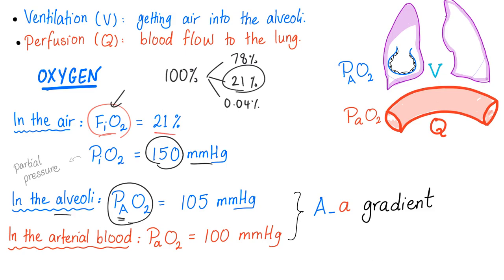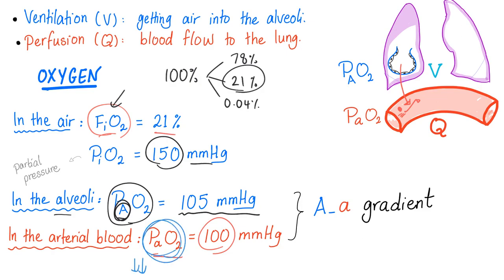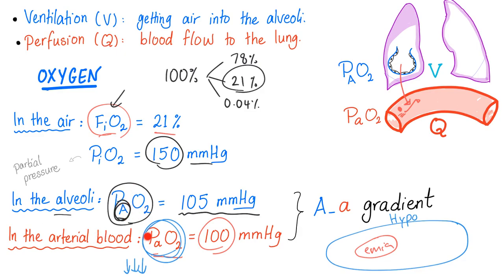In the alveolus, PAO2 — which stands for alveolar oxygen pressure — is about 105 mmHg. Then oxygen jumps from the alveoli onto the blood first, and then onto the hemoglobin. When it's in the blood we call it PaO2, and this is going to be 100 mmHg. Hypoxemia is when the PaO2 decreases — this is hypoxemia, one of the causes of hypoxia. Hypoxia and hypoxemia are not the same thing; hypoxemia is one cause of hypoxia. The difference between PAO2 and PaO2 is called the A-a gradient, and it's normally between 5 and 15 — in this example, it's 5.